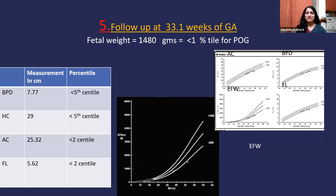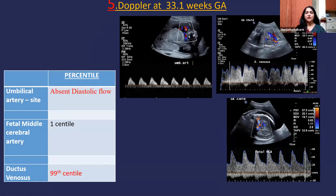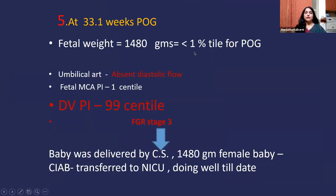She came back after a gap of two weeks, at 33.1 weeks of gestation. The baby weight was 1480 grams, which for 33.1 weeks was less than the 1st centile. On Doppler, there was absent diastolic flow in the umbilical artery, and the ductus venosus showed a deepened A wave, giving rise to increased percentile values. The ductus venosus PI was at the 99th centile, and with absent diastolic flow, this was classified by the Barcelona system as fetal growth restriction Stage 3.